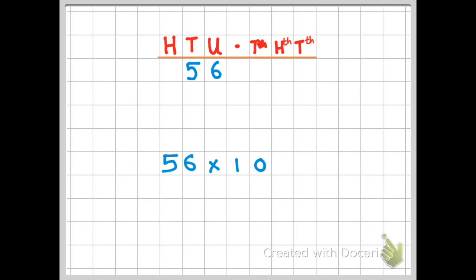Take a look at my place value chart. I have a hundreds column, tens column, and units column, then the decimal point, followed by the tenths, hundredths, and thousandths columns.